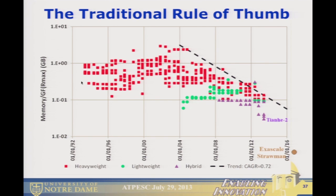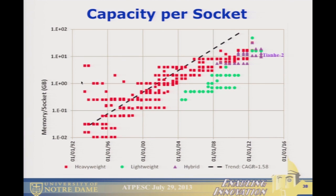Looking at capacity per socket — making it more relevant — there was a good trend line, but it looks like we've gone off the rails. With the highest-performing machines — the hybrids with GPUs — memory per socket is kind of flat. There isn't a whole lot of growth. And if you look at where the exascale machine would have been, we projected about where the trend line appears to be ending up.